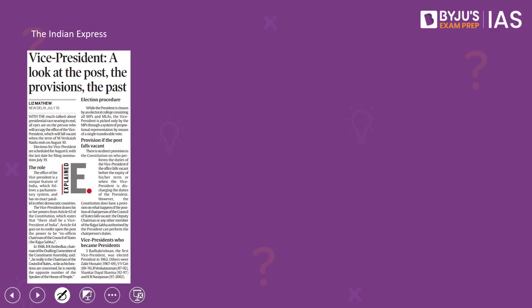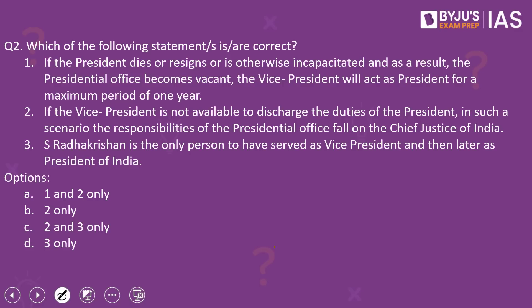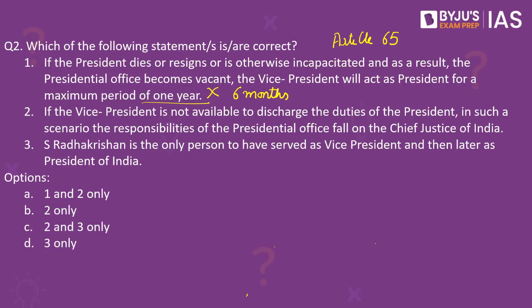What is the context? The National Democratic Alliance recently announced its candidate for the upcoming vice presidential election. In this context, this article from the Indian Express looks at the post of the vice president in India — the provisions and previous developments with respect to the office. According to Article 65 of the Indian Constitution, the vice president of India will have to discharge the duties if the office of the president falls vacant for any reason other than the expiry of the term. However, a notable provision is that the vice president can act as president only for a maximum period of six months. Hence, the first statement is wrong.